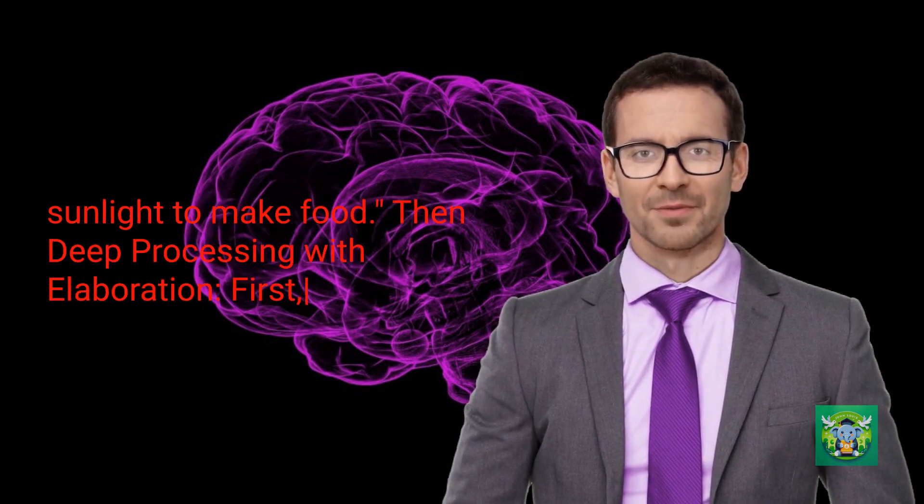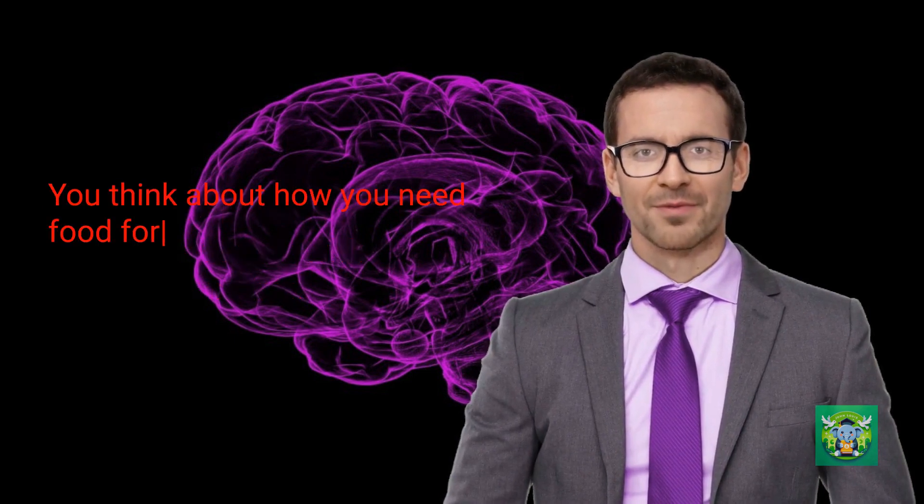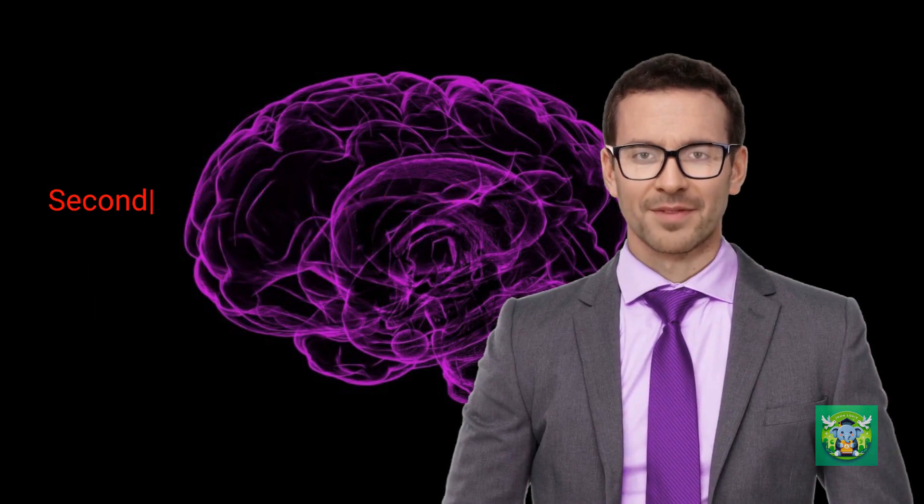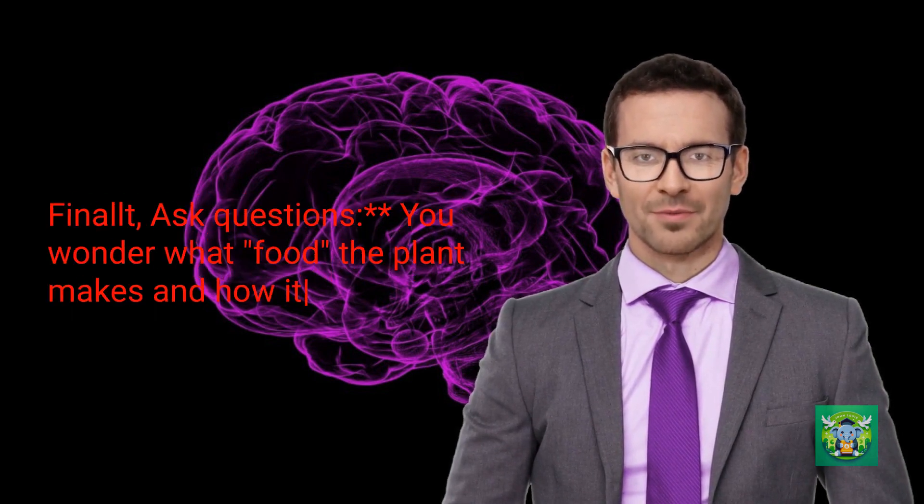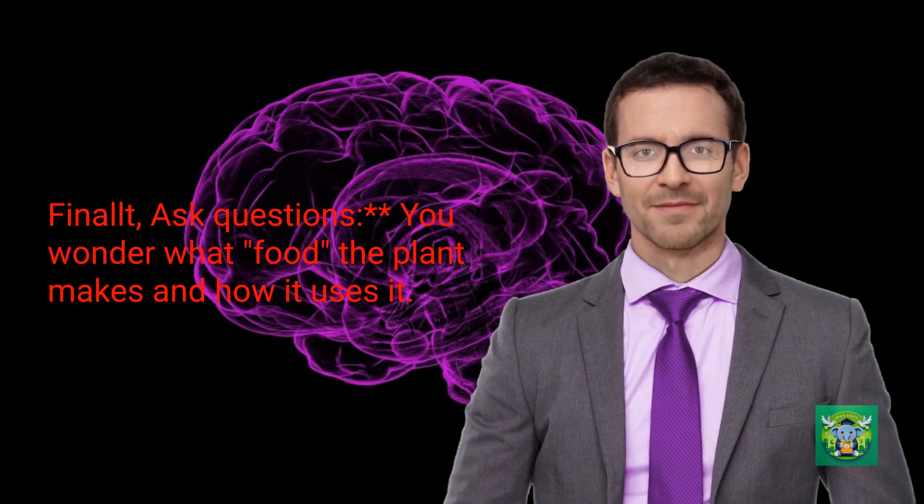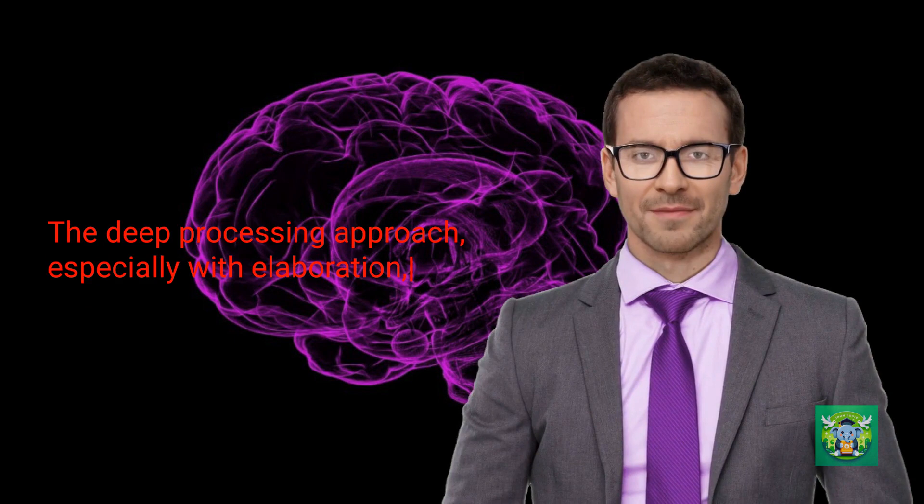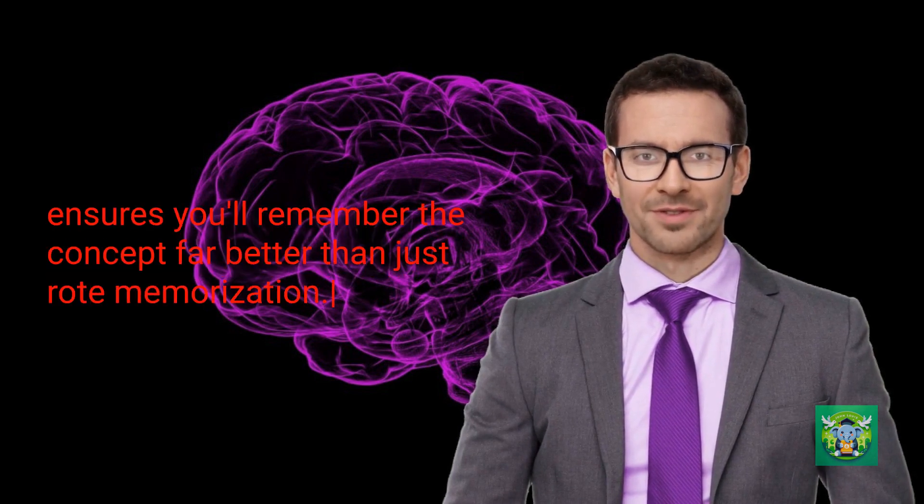Then deep processing with elaboration. First, you think about how you need food for energy and connect that to plants needing sunlight. Secondly, create mental images: you picture a plant absorbing sunlight and leaves changing color. Finally, ask questions: you wonder what food the plant makes and how it uses it. The deep processing approach, especially with elaboration, ensures you'll remember the concept far better than just rote memorization.